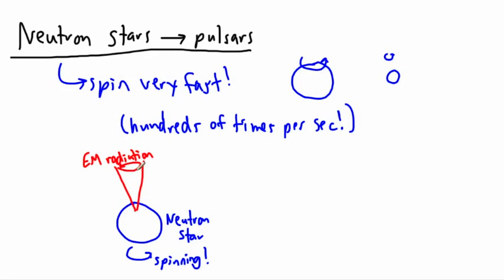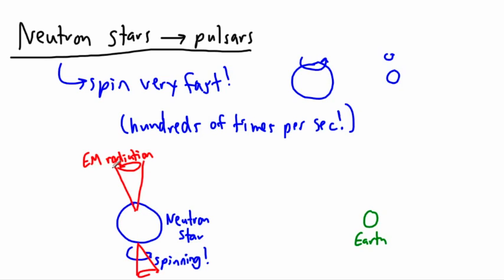That cone will sort of rotate, going around and around. And the same thing happens on the other side too. So because of that, you have this cone of light going around and around, perhaps hundreds of times per second. Now, what happens if that cone of light is lined up with us? So what if here's us on Earth, and we're looking at this neutron star? We would not see this radiation coming out of it, at least not as easily, because it's not lined up.